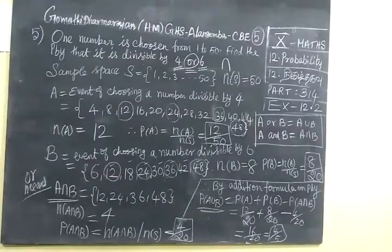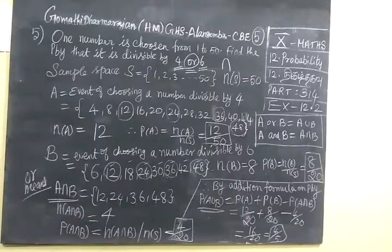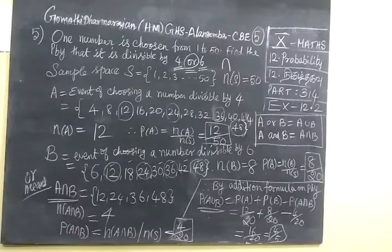Now you see the answer for the fifth question. It is 12 plus 8 is 20, minus 4 is 16.